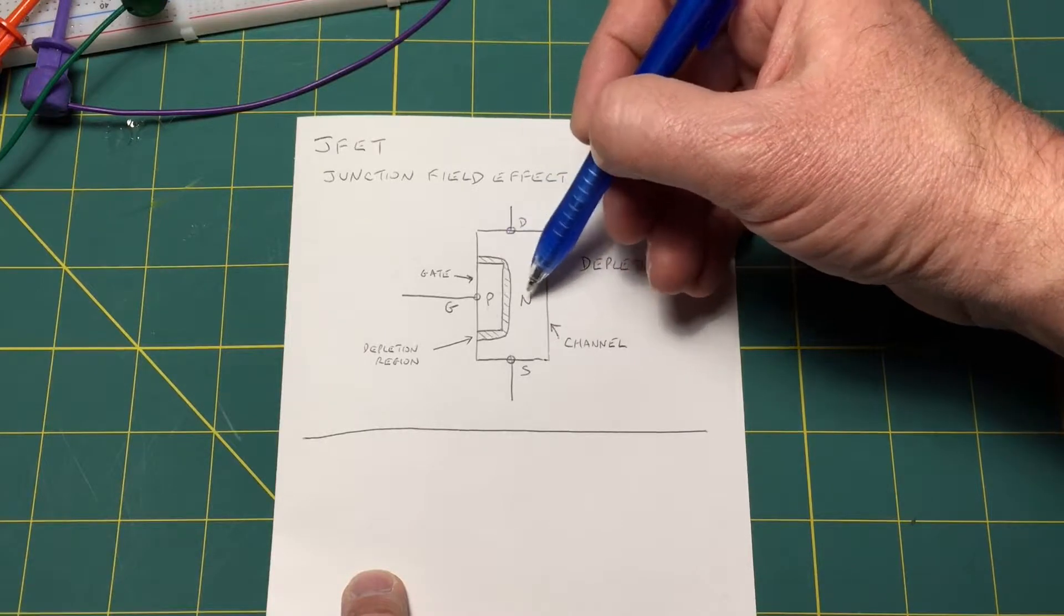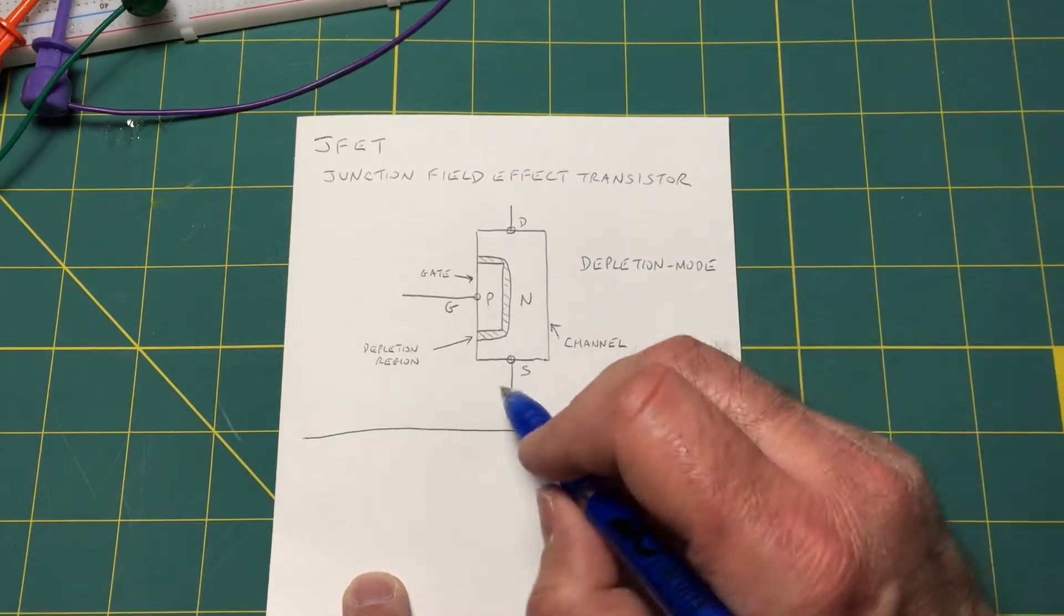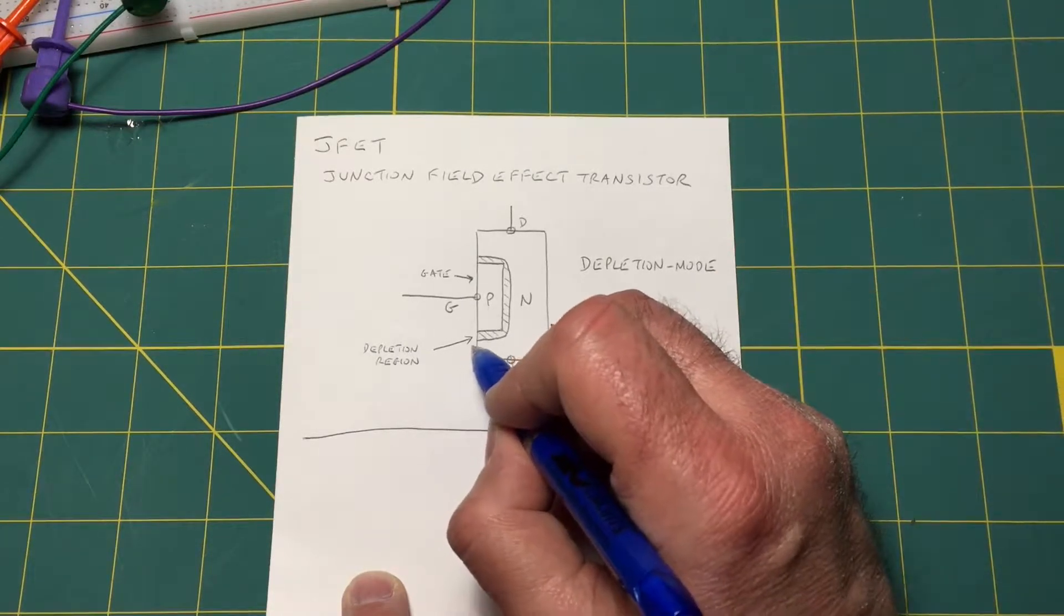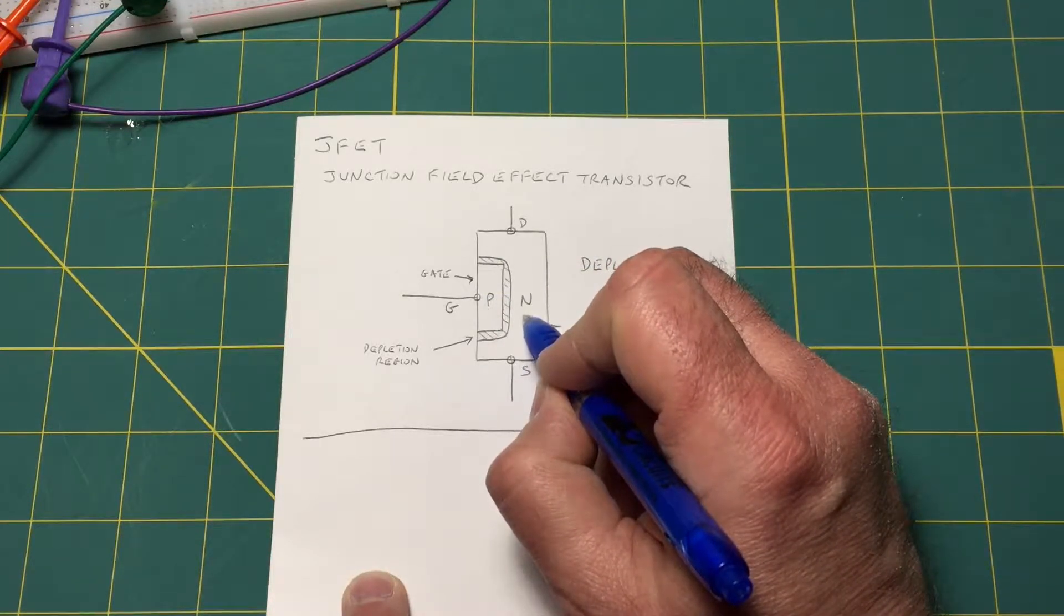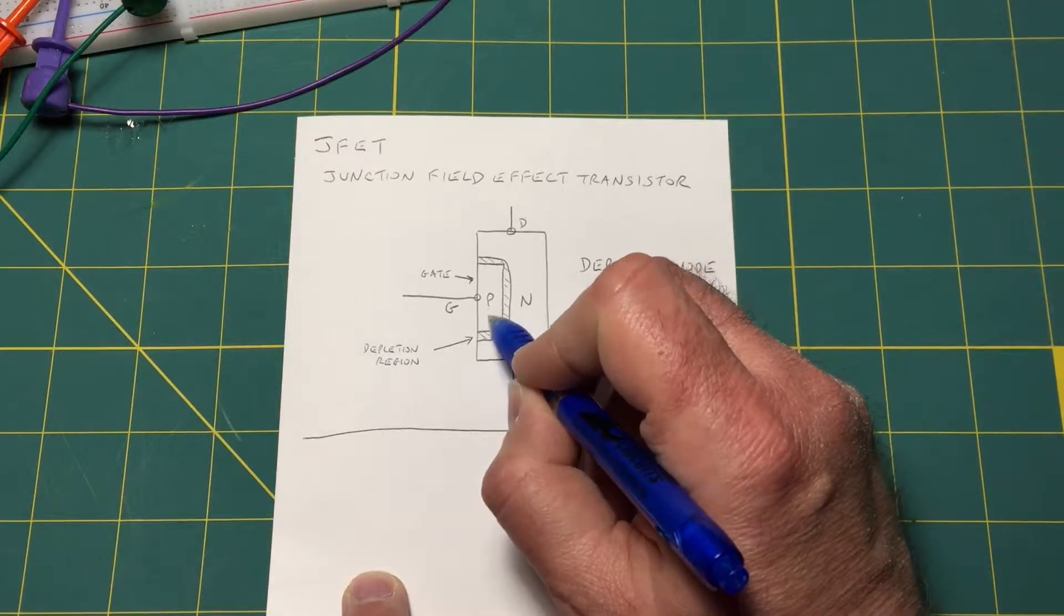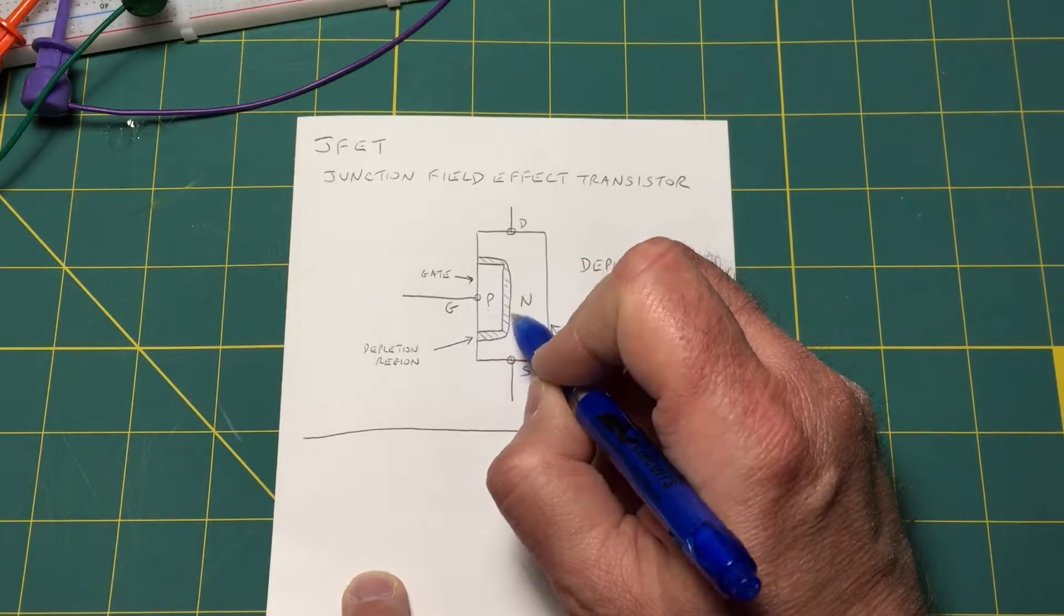Now this is a P-N junction. That's where we get the junction from. And it's a depletion mode device and we have a depletion region between the P and N material where the excess electrons in the N material and the excess holes in the P material will combine and deplete this region of charge carriers.